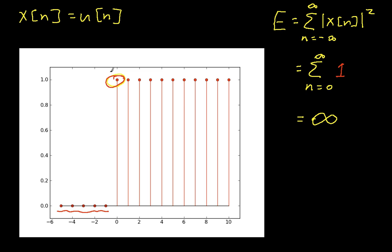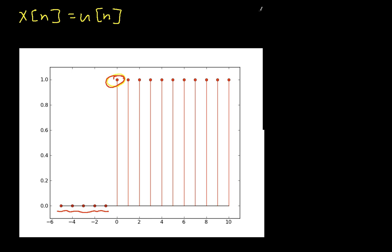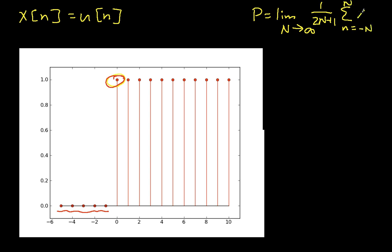It turns out we can also compute the average power. The average power P is the limit as cap N goes to infinity of 1 over (2N + 1) times the summation of little n going from minus N up to cap N of the magnitude squared of x(n). To see what this looks like, let's go through a couple of different values of N.